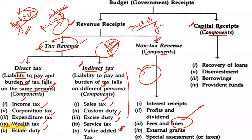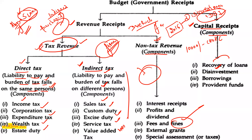Capital receipts include: recovery of loans, and disinvestment. Disinvestment means the government is reducing its share — for example, if the government earlier had more than 51% stake in IDBI and now wants to reduce that share. Also borrowings and provident funds come under capital receipts. If there is an impact on assets or liabilities, it comes under capital.